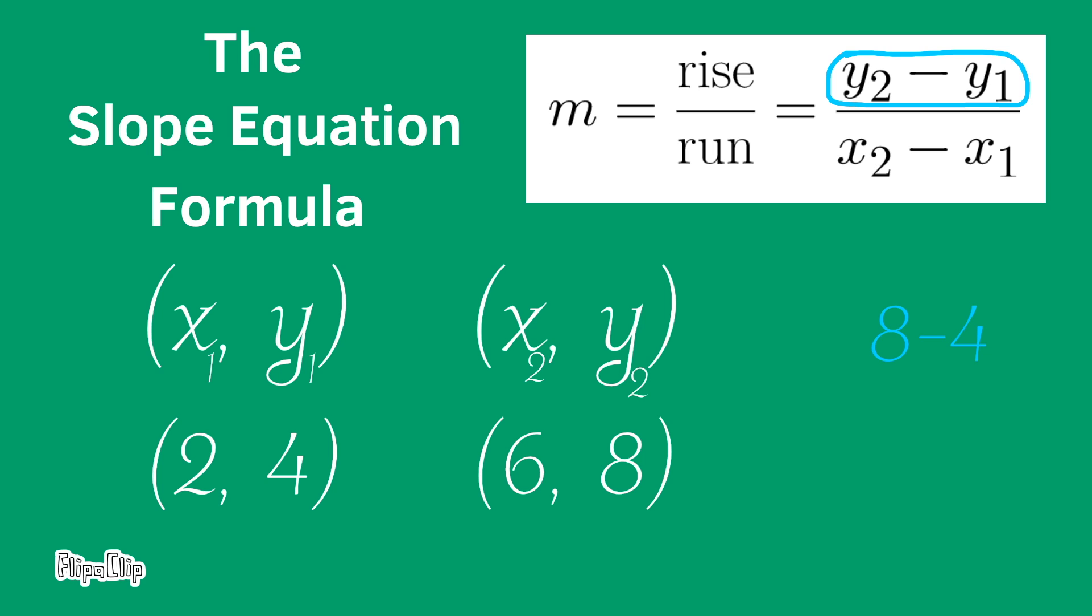y₂ minus y₁. y₂ is 8 and y₁ is 4, over x₂ minus x₁. x₂ is 6 and x₁ is 2.